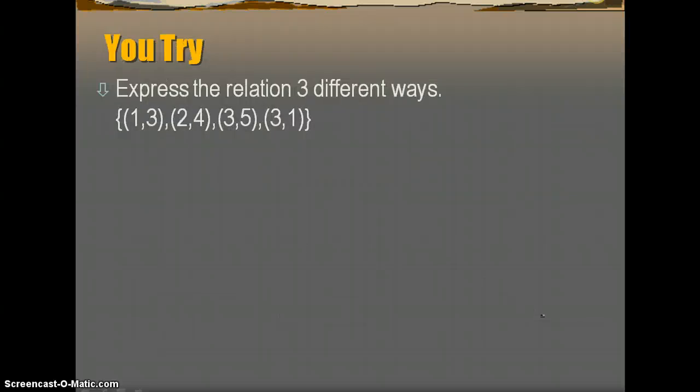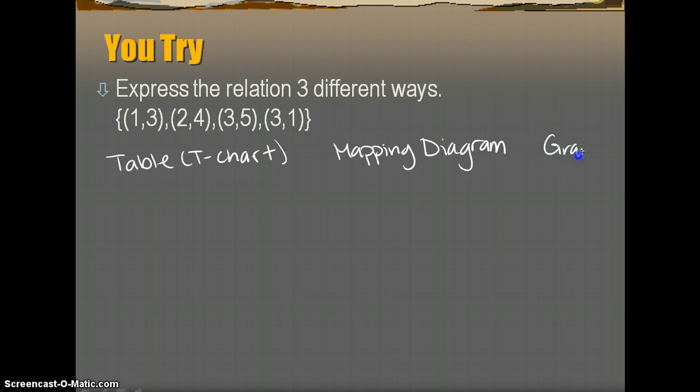So for the You Try, you're going to express the given relation three different ways. So your relation are the ordered pairs (1,3), (2,4), (3,5), and (3,1). And again, you're going to show it the three ways in which I just did. So a table or t-chart. And you'll hear me reference both. And then a mapping diagram. And then last is a graph. Okay, so you're going to use those three with those ordered pairs.